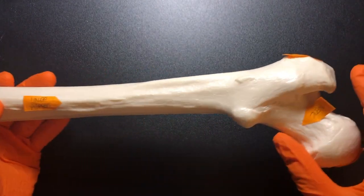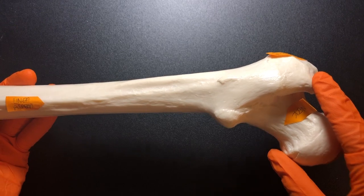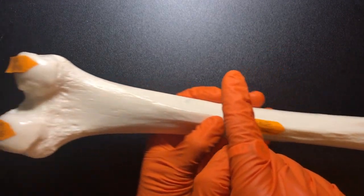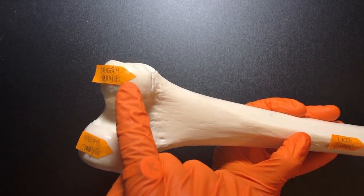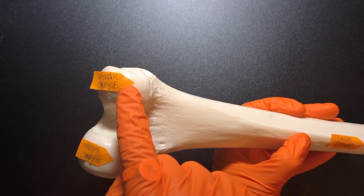When we remember that the greater trochanter is lateral, again, we follow that down. And that is the lateral condyle.